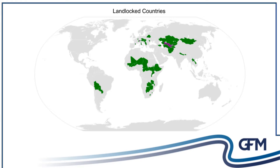Those are areas of substantive knowledge children will learn as they move through their geography curriculum. But disciplinary knowledge takes those facts and allows students to apply them critically. I use phrases like 'think like a geographer' or 'speak like a geographer.' Here's a map showing the 44 landlocked countries in the world, two of them being double landlocked. Substantive knowledge: a student can say those countries do not have a coastline and are surrounded by other countries on all sides.